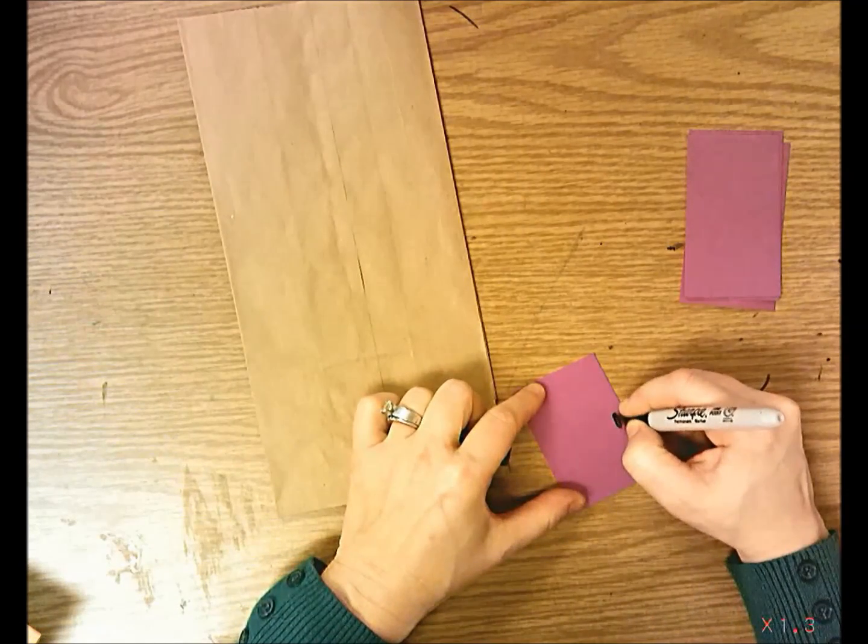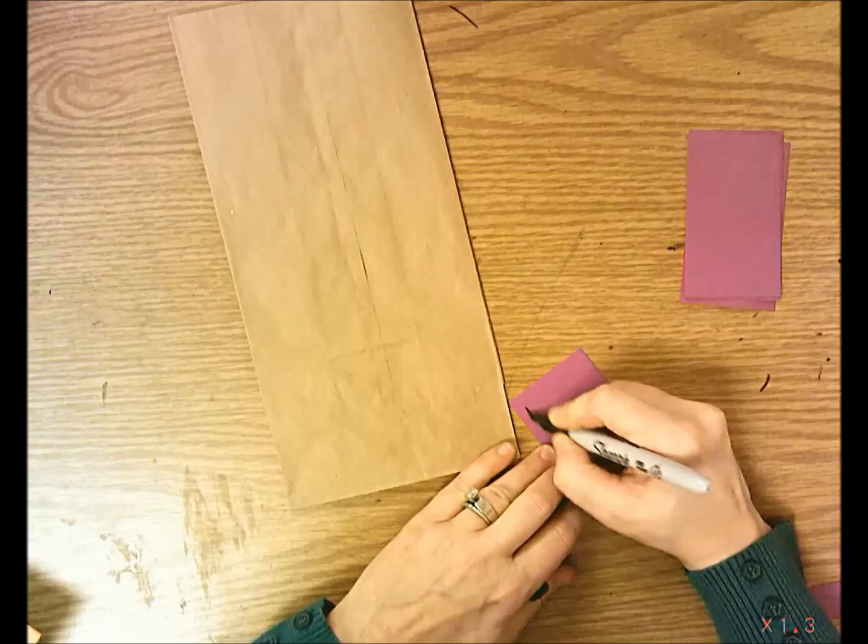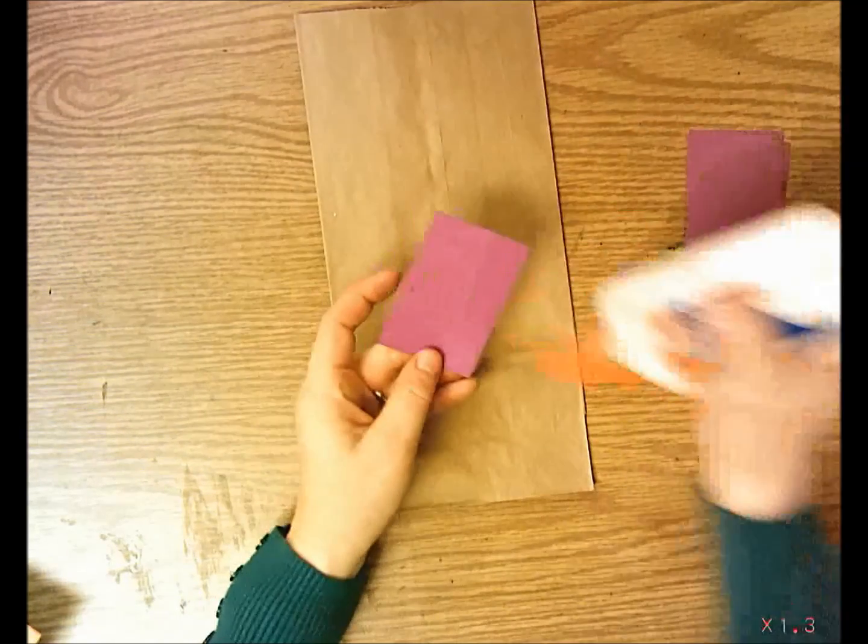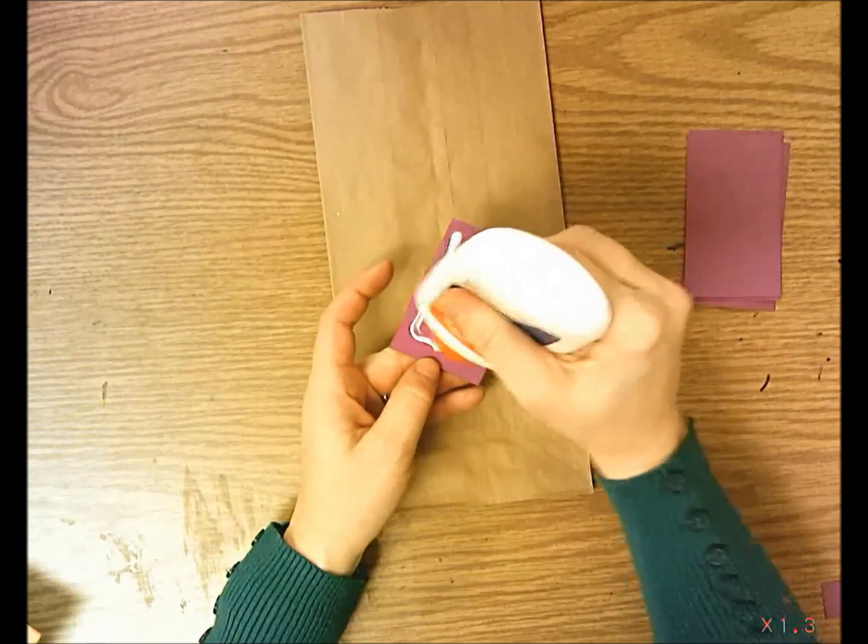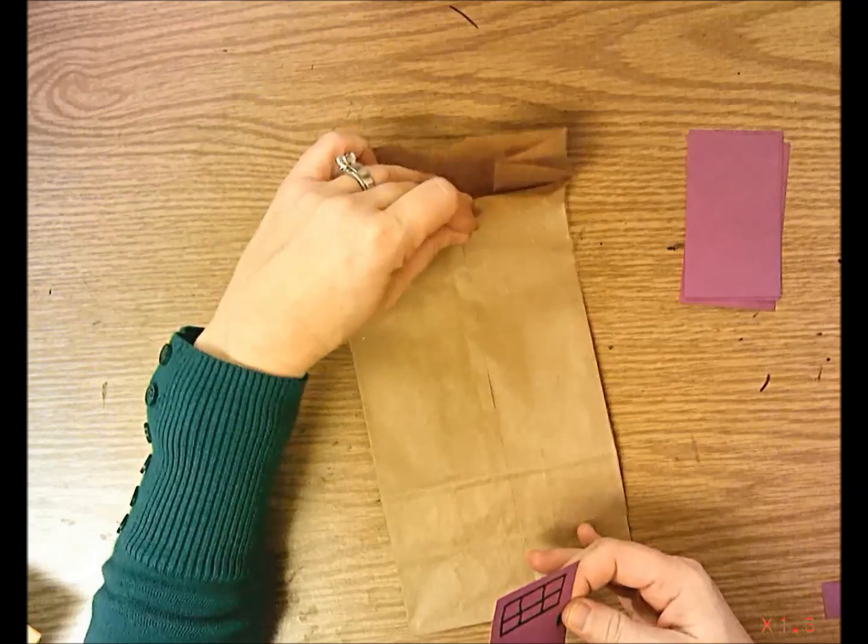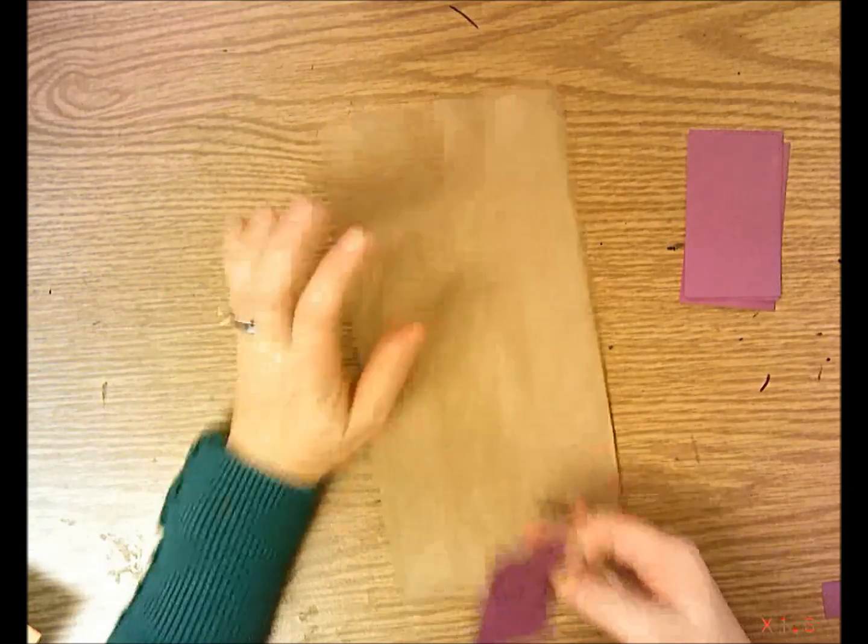Then decorate your door with marker. Add a doorknob, add a window. Then you're going to glue this on. Flip it around, do a frame of glue, and glue this to the bottom of your bag. Make sure you don't glue it to the top where you can open it up.